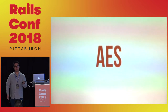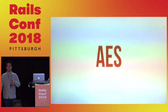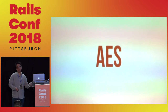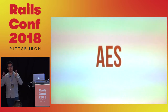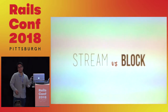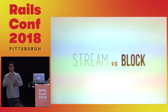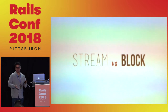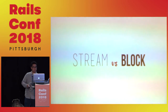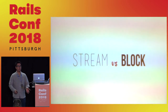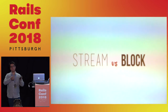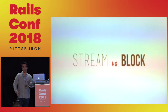What type of encryption does credentials use? The cipher Rails uses is AES, which is a symmetric cipher. A stream cipher encrypts your bits individually, whereas a block cipher divides your data into blocks and encrypts those blocks — AES is a block cipher.